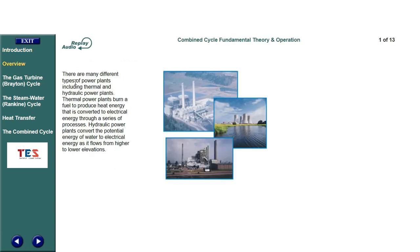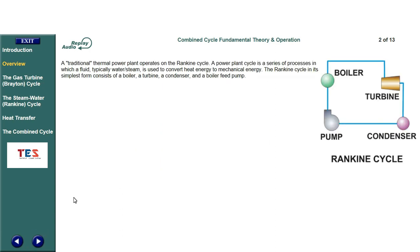There are many different types of power plants, including thermal and hydraulic power plants. Thermal power plants burn a fuel to produce heat energy that is converted to electrical energy through a series of processes. Hydraulic power plants convert the potential energy of water to electrical energy as it flows from higher to lower elevations. A traditional thermal power plant operates on the Rankine cycle. A power plant cycle is a series of processes in which a fluid, typically water or steam, is used to convert heat energy to mechanical energy.